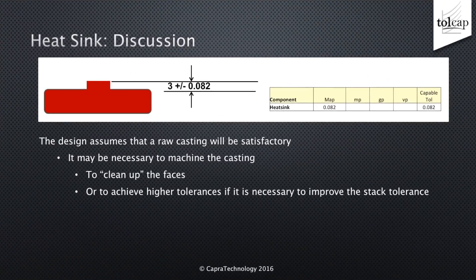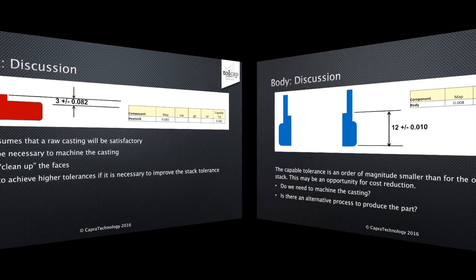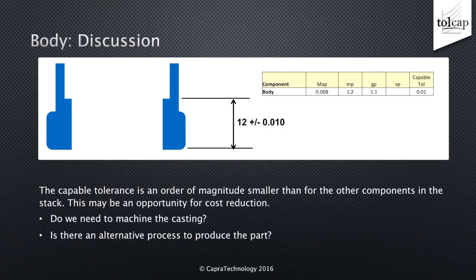On the heatsink, the design assumes a raw casting will be satisfactory. It may be necessary to machine the casting to clean up the faces or to achieve tighter tolerances, if it's necessary to improve the stack tolerance. On the body, the capable tolerance is an order of magnitude smaller than for the other components in the stack. This may be an opportunity for cost reduction. Do we need to machine the casting? Is there an alternative process to produce the part?